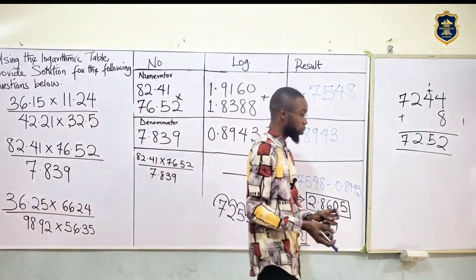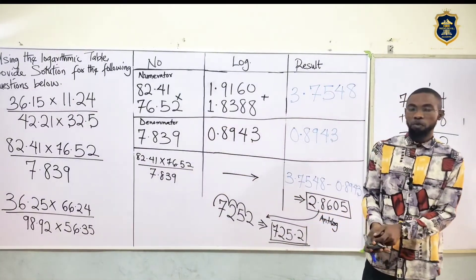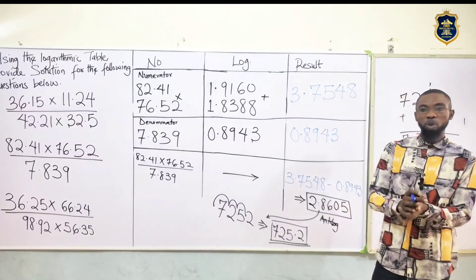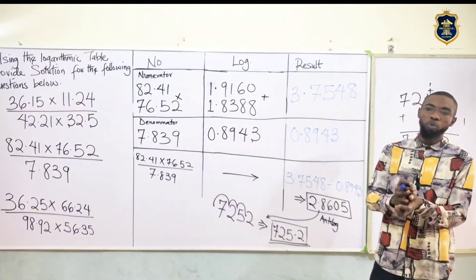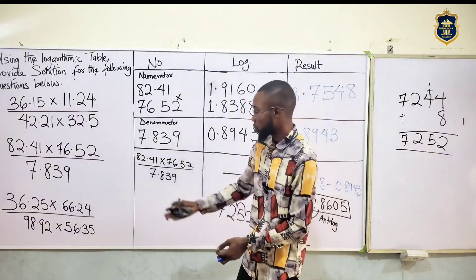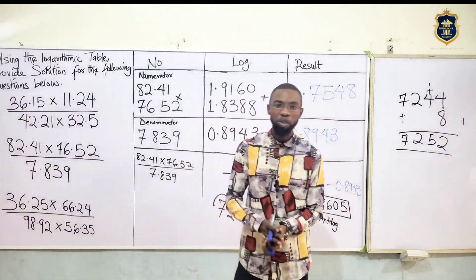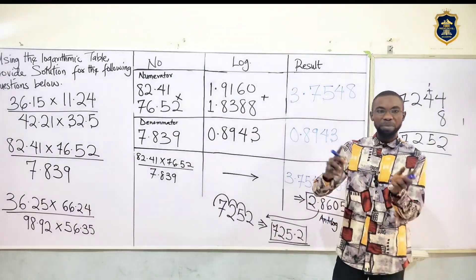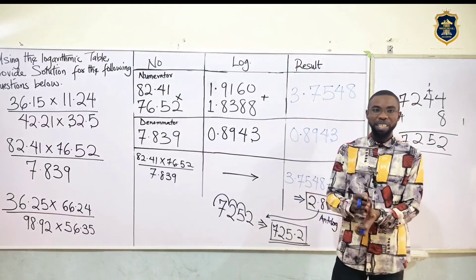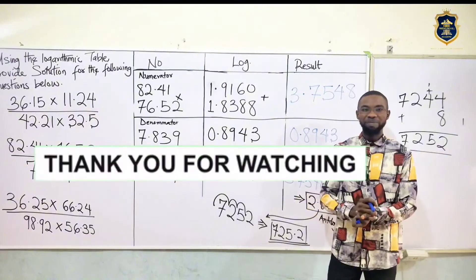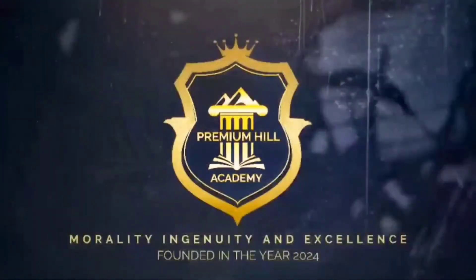Therefore our answer becomes 705.2. That's the main answer to this question. It's quite simple — very easy once you look through it. In case you still have questions, go to the comment section and let us know, or send directly to my WhatsApp number on the screen. I'll be leaving the third question for you to solve — drop your answer in the comments. In the next video we'll be doing an intermediate question involving logarithm tables. See you in the next video. Premium Hill Academy — morality, ingenuity, and excellence at its peak.